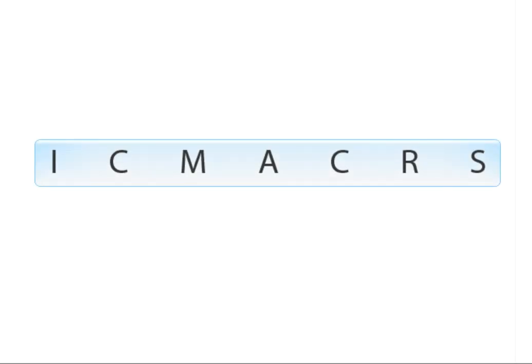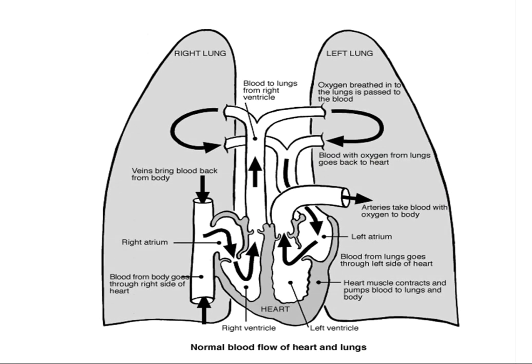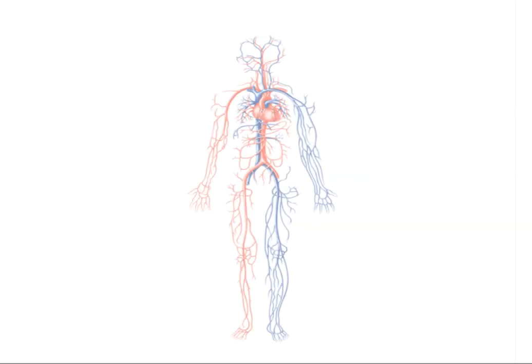Now you need to combine your memory mnemonic for systemic circulation with your knowledge of the pulmonary circuit, and you should be able to trace the path of blood around the body.